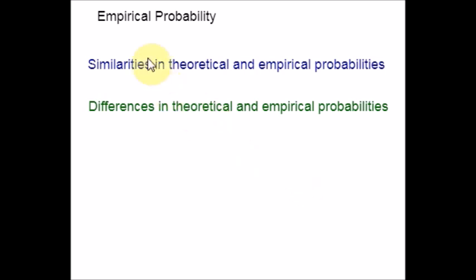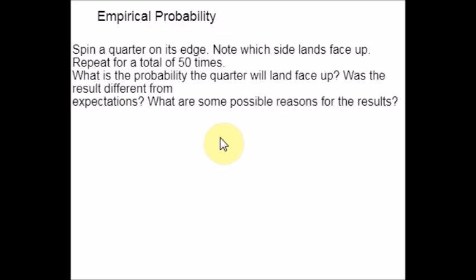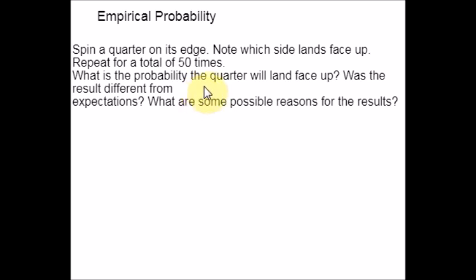Let us do some examples. Spin a quarter on its edge and note which side lands face up. Repeat the experiment for a total of 50 times. What is the probability the quarter will land face up? For this problem, answers will vary. The heads side should have a large probability of occurrence because the weight of the tail side is heavier, causing it to fall first — that is the effect of the copper center. This is just an analysis problem; no calculation is needed.